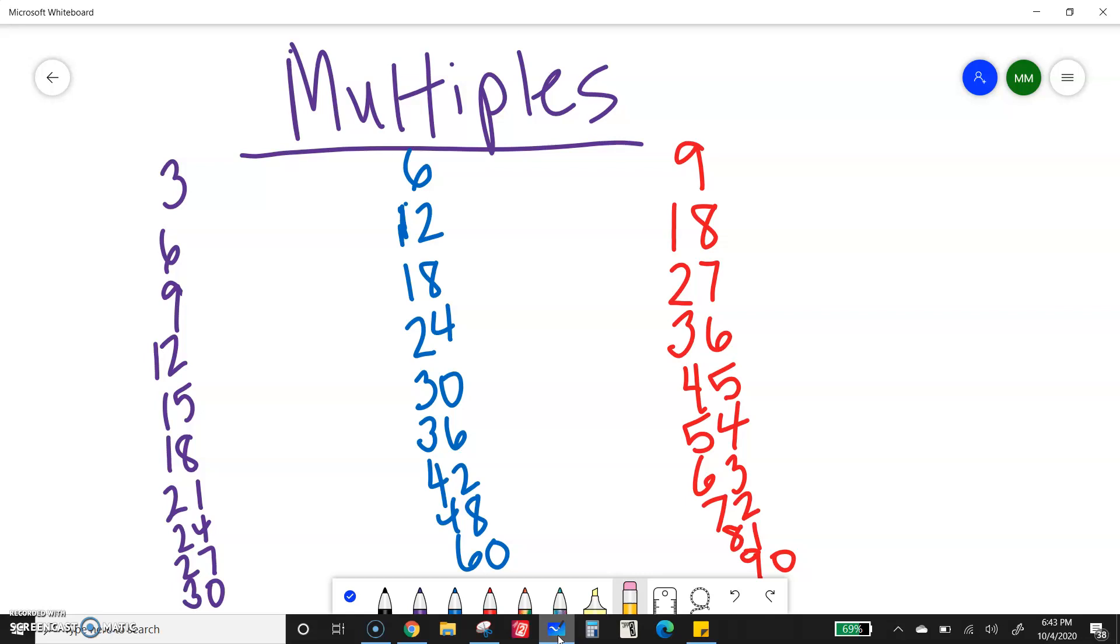It's to the tune of Twinkle Twinkle Little Star. So we have: four, eight, twelve, sixteen, twenty, twenty-four, twenty-eight, thirty-two, four times nine is thirty-six.